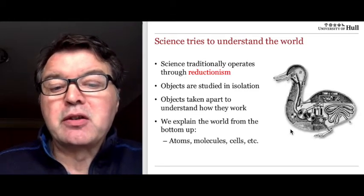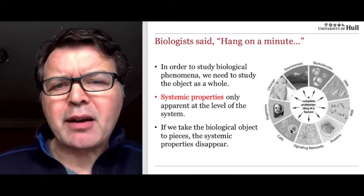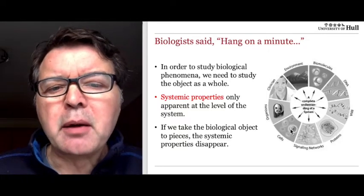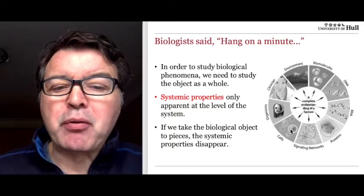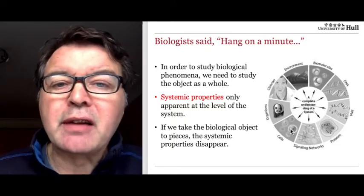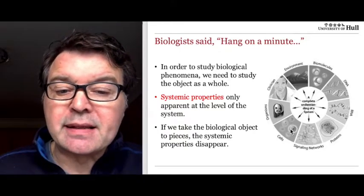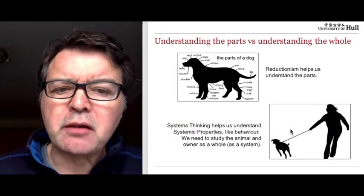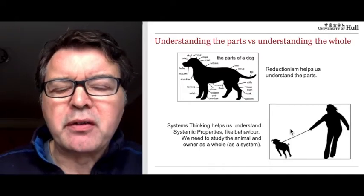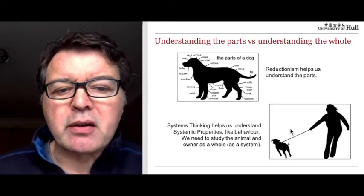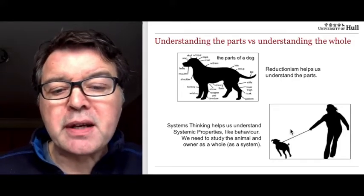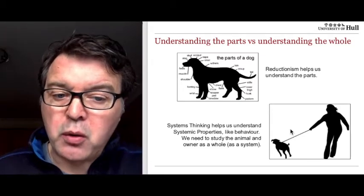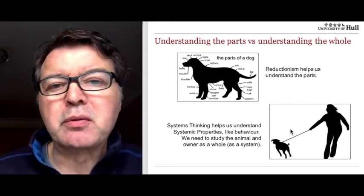Objects are taken apart to see how they work and we try to explain the world from the bottom up — so we start with atoms, then go to molecules and cells. But biology said: there's a problem with reductionism, because in order to study biological phenomena we need to study the object as a whole. Systemic properties are only apparent at the level of the system, and if we take biological objects to pieces, the systemic properties actually disappear and we can't see them anymore. For example, if we want to understand the behaviour of dogs, we need to study the animal and the owner as a whole system.